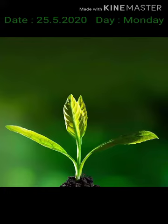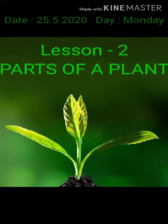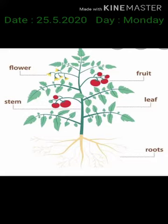Today we start a new lesson: parts of a plant. Look at this picture — there are parts of a plant: roots, stems, leaf, flower, and fruit. Okay students, we will understand this lesson with the help of a story. Are you ready for the story? Let's start.